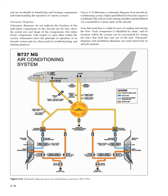Schematic diagrams do not indicate the location of individual components in the aircraft, nor do they show actual size and shape of components, but rather locate components with respect to each other within the system. Schematics show the principle of operation of an aircraft system and are often used for troubleshooting and training purposes. For example, a schematic diagram of an aircraft air conditioning system may show how high-speed bleed air from the engine is combined with cold air in a mixing chamber and distributed via a manifold to various parts of the aircraft, with each line coded for ease of reading.